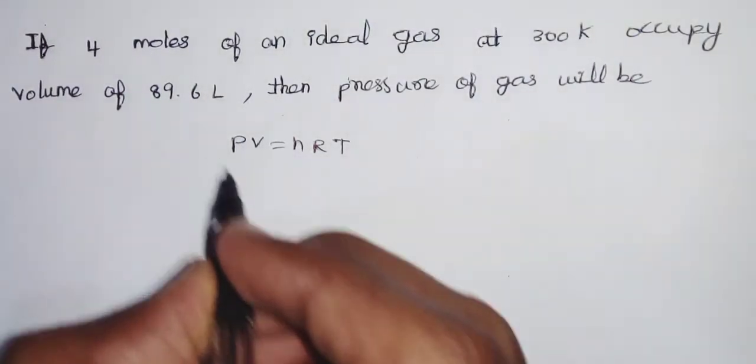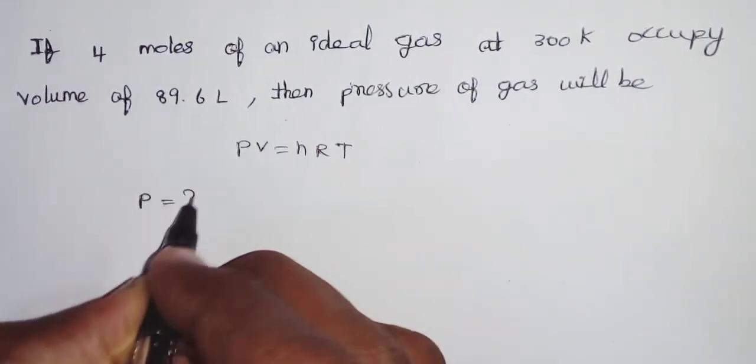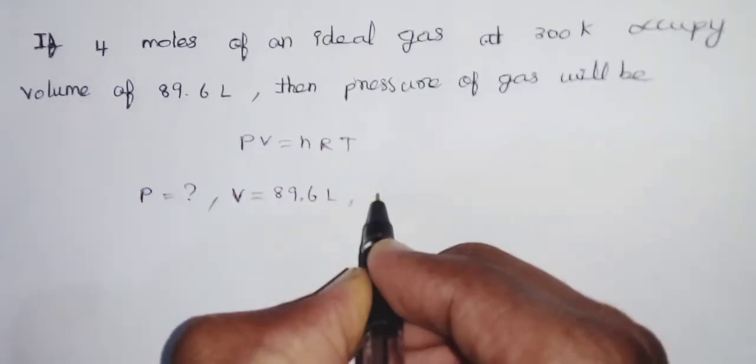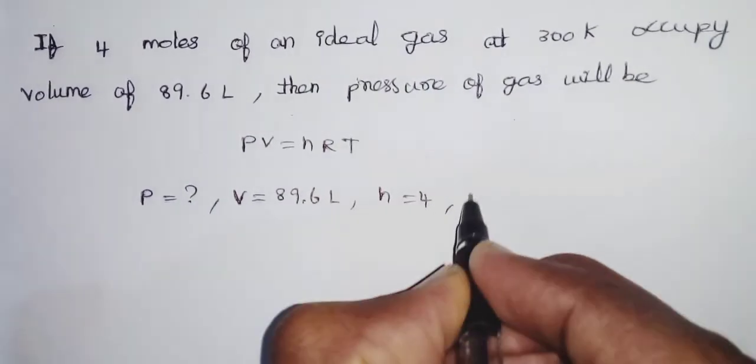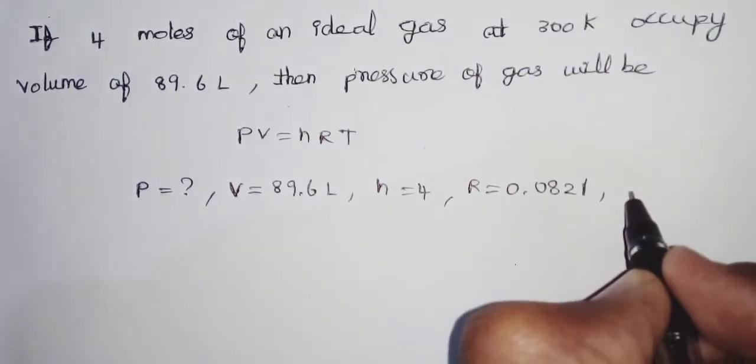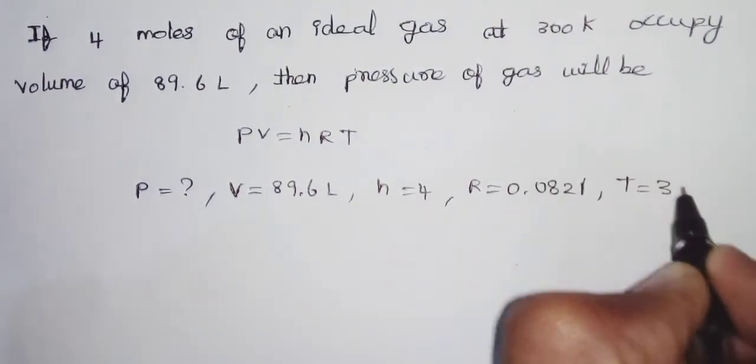Where P is pressure, V is volume, 89.6 liters, n is number of moles, 4 moles, R is the gas constant, 0.0821, and T is temperature, 300 Kelvin.